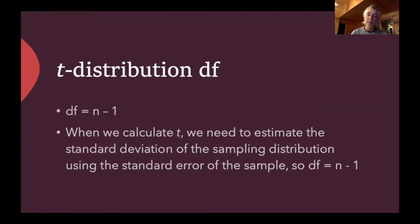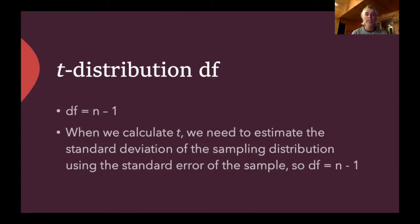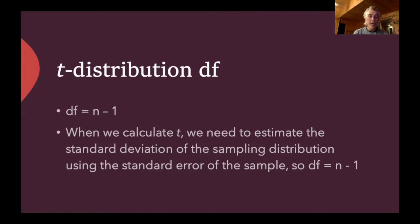You'll notice we needed to specify degrees of freedom for a t-distribution. A t-distribution is specified only by its degrees of freedom — we don't specify a mean or standard deviation. When we calculate t, we needed to estimate the standard deviation of the sampling distribution using the standard error from our sample, so we've used one piece of information from our sample and only have n minus one pieces of information left. The degrees of freedom for a one-sample t-test is therefore our sample size minus one.